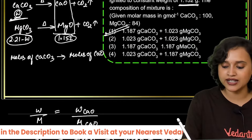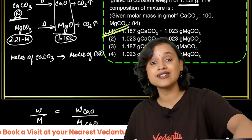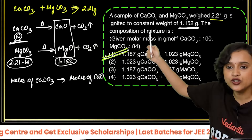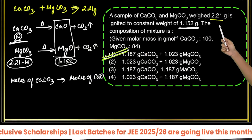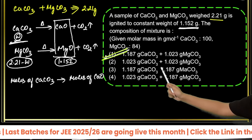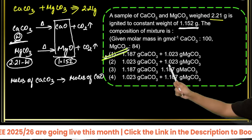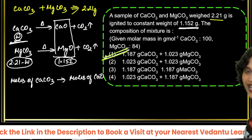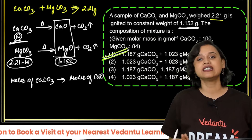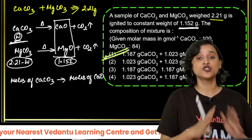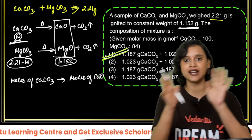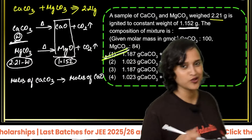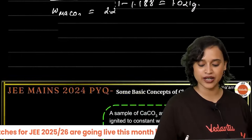There's also an easier method: since the mixture must weigh 2.21 grams, you can just add up the options and whichever pair sums to 2.21 grams is the correct answer. Even if you don't know how to solve it fully, this elimination approach works. The correct answer is option 1.